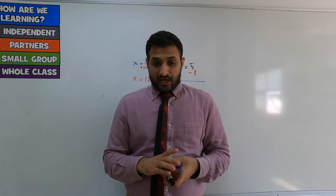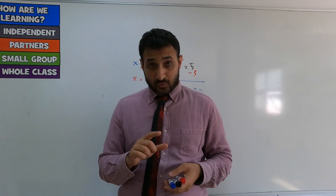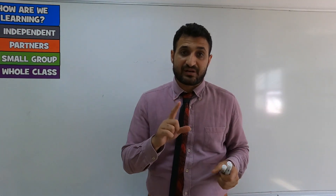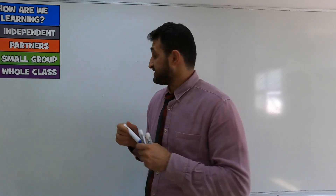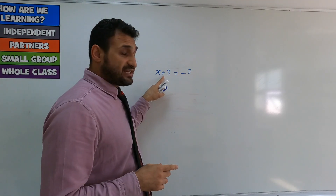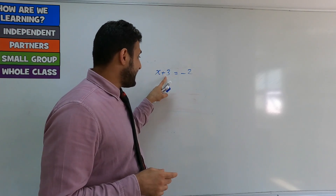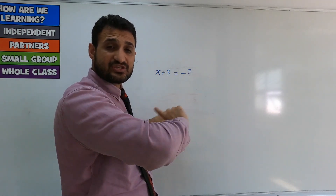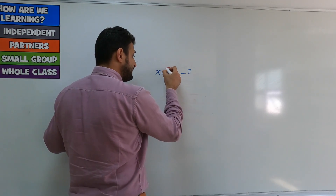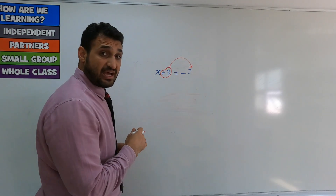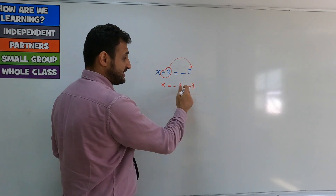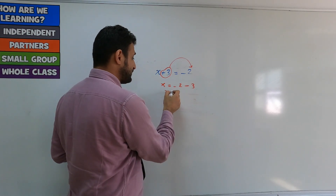There is a third way — moving numbers to the other side. But remember, this works only for addition and subtraction. For example, if I have x plus 3 equals negative 2, instead of subtracting 3 from both sides, you can just move 3 to the other side — but you must change the sign. So positive 3 moves to the other side and becomes negative. x equals negative 2 minus 3, so x equals negative 5.